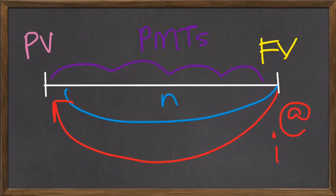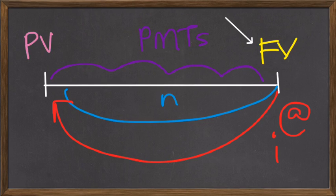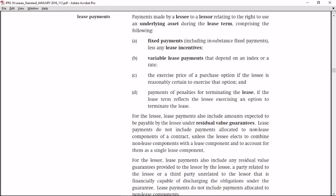IFRS 16 covers the initial measurement of the lease liability in the books of the lessee. This presentation focuses on the variable future value that needs to be considered in the calculation of the present value of lease payments. This is an extract from Appendix A of IFRS 16, dealing with the definition of lease payments, specifically the portion dealing with the residual value guarantee.